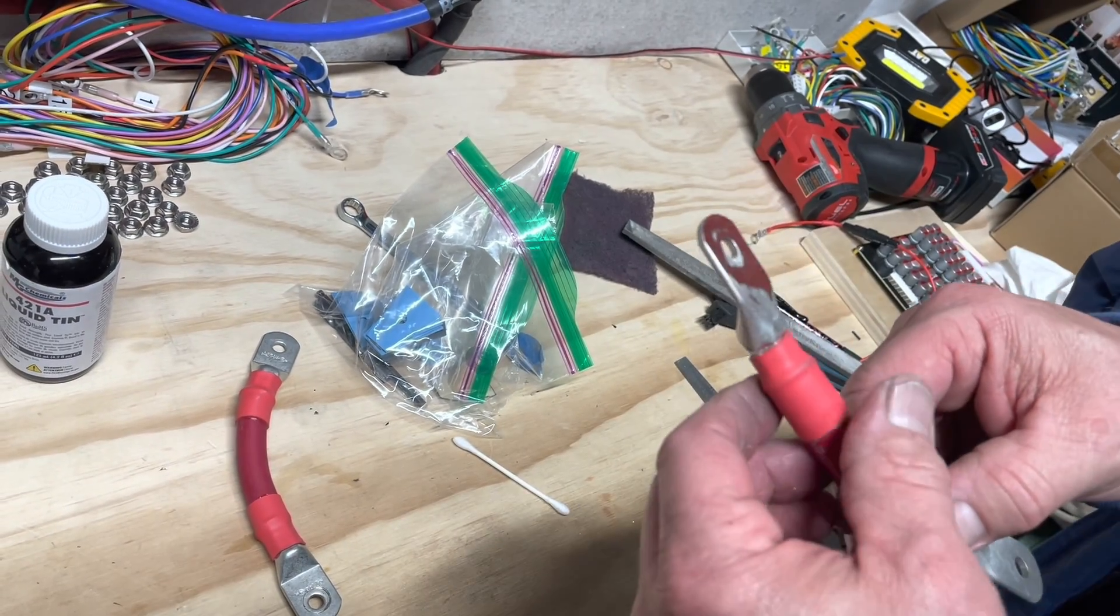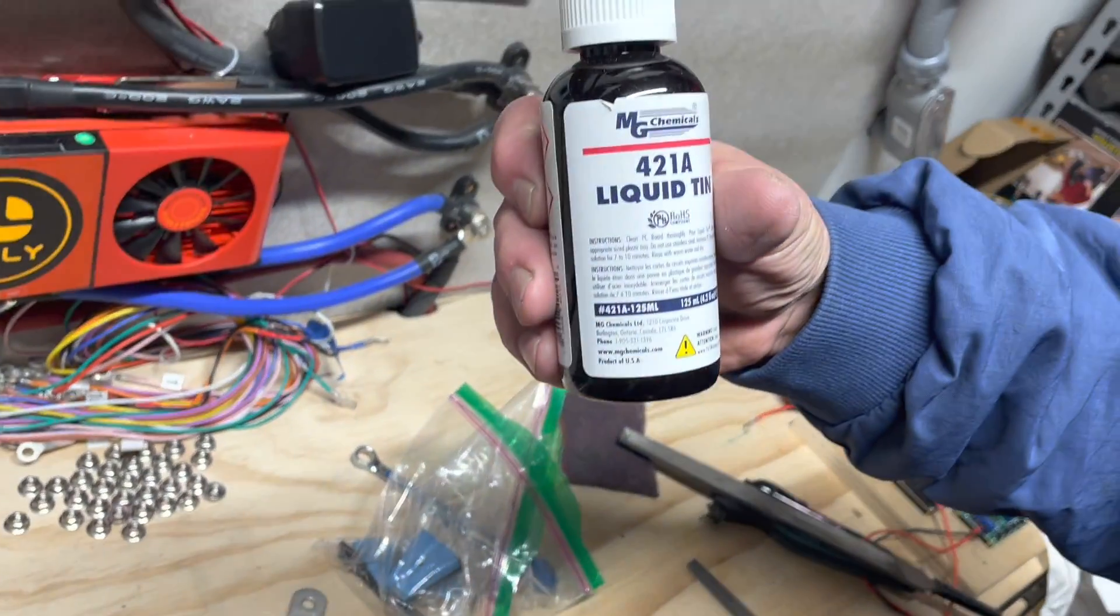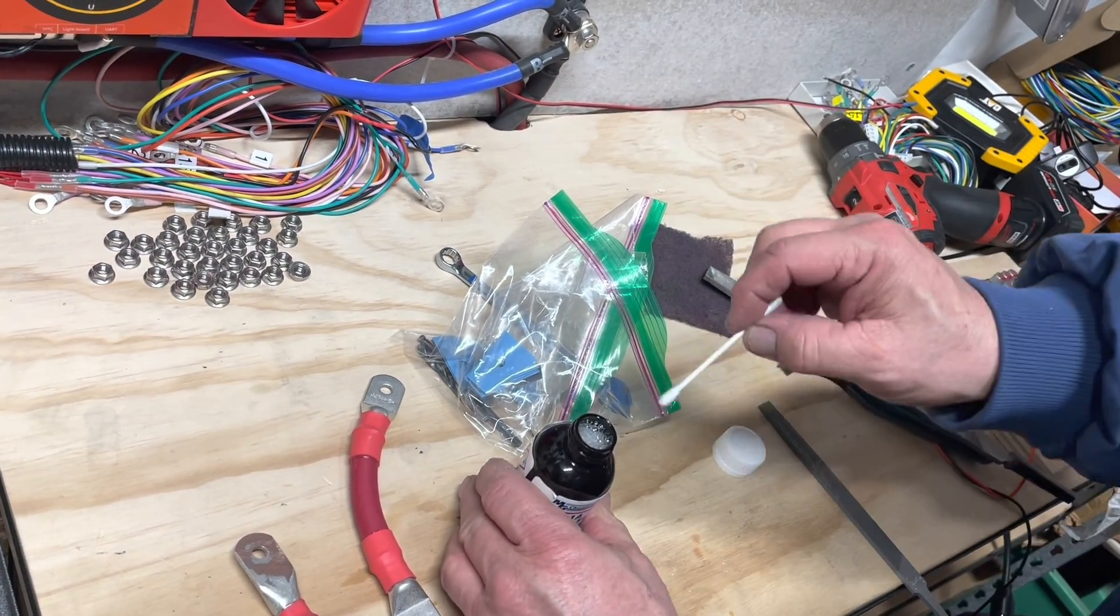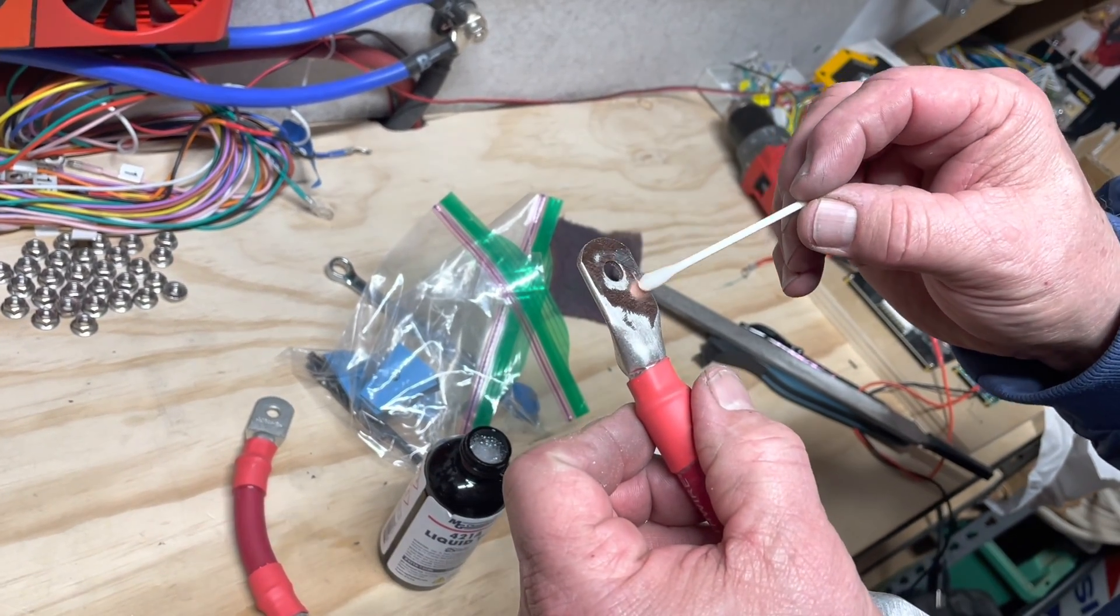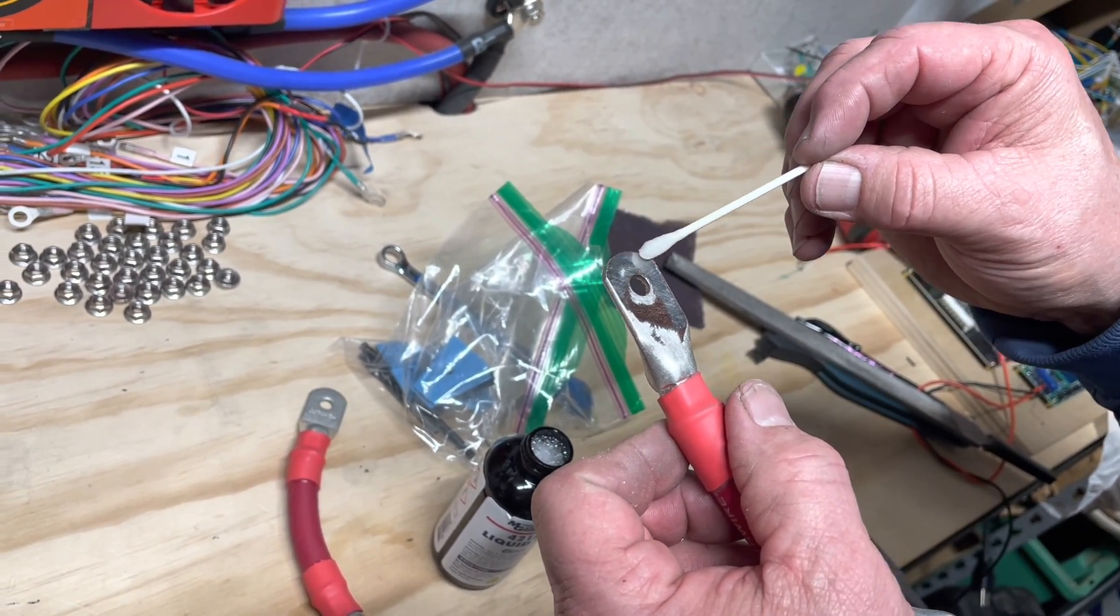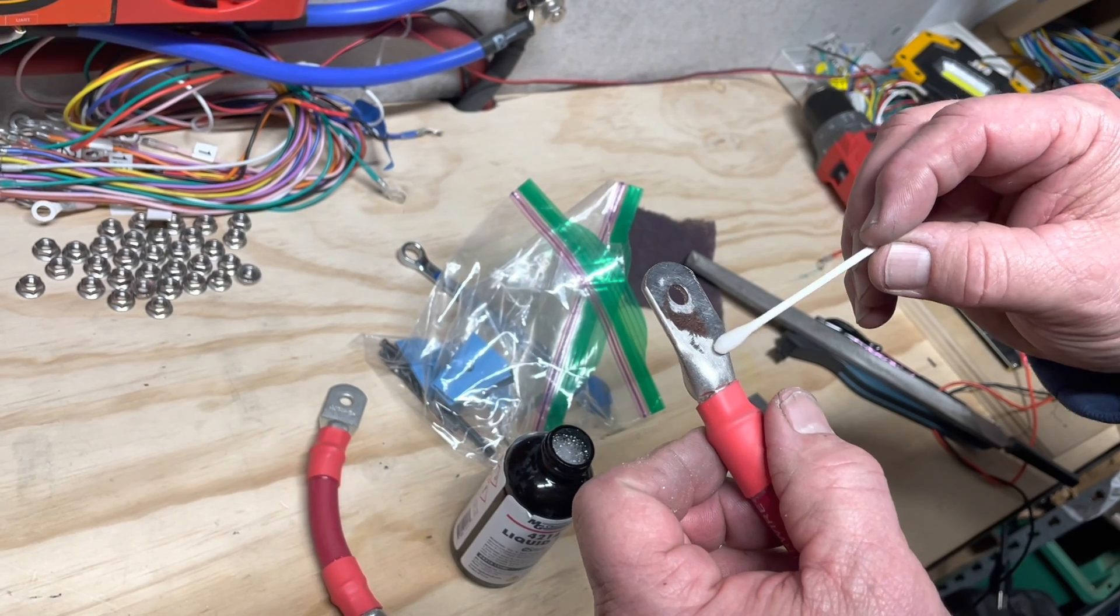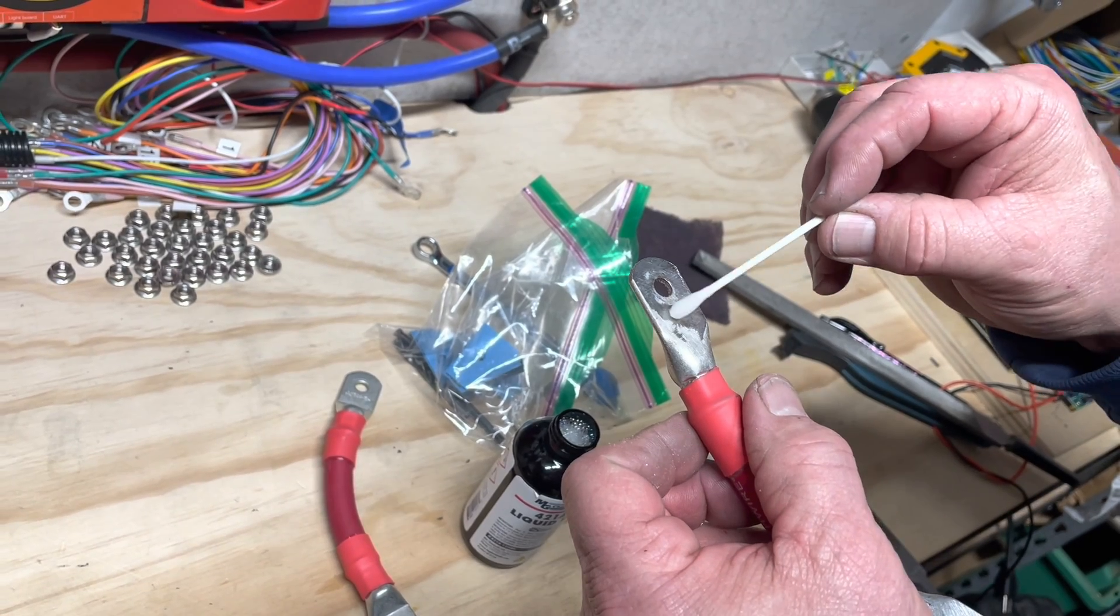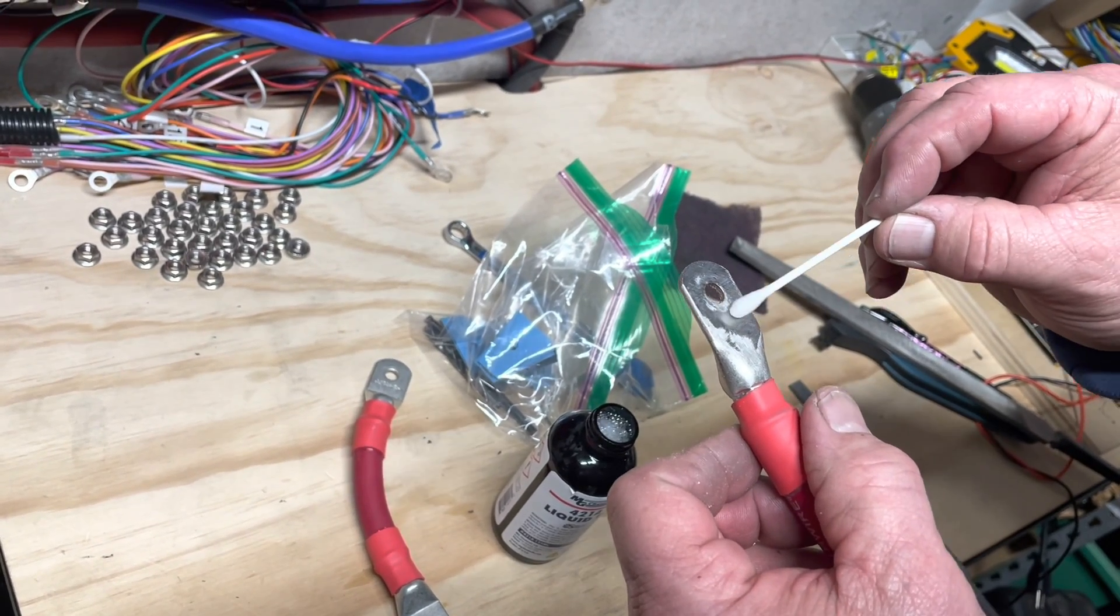Now you're thinking, okay Einstein, you just got all the tin coating off of that thing, what are you going to do now? Well, liquid tin - magic. I stay away from the hole, no need to go into the hole, and you just put that on there and you let that sit for a few minutes.